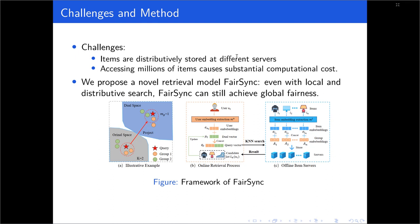So there are challenges. Firstly, items are distributively stored at different servers. Second, accessing millions of items causes substantial computational cost. In this paper, we propose a novel retrieval model, FairSec. With local and distributed search, we can still achieve global fairness. Welcome to our talk — we are happy to see you there. Thank you.